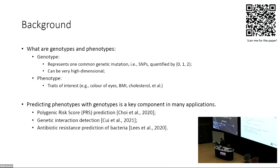The phenotype is the trait of interest that we want to predict. For example, it could be eye color, body mass index, or cholesterol levels in your blood. The task is to predict a phenotype using a genotype, and we can consider this a classical supervised learning problem where the features are the genotype and the prediction target is the phenotype.